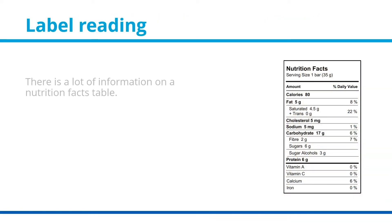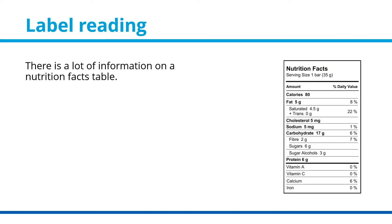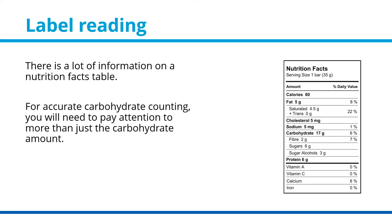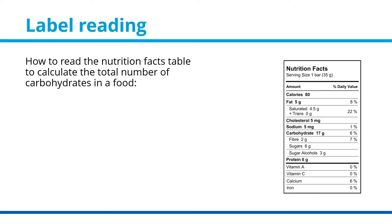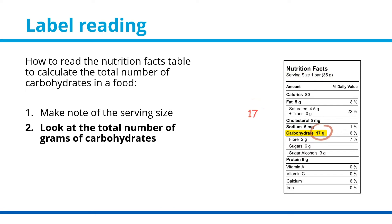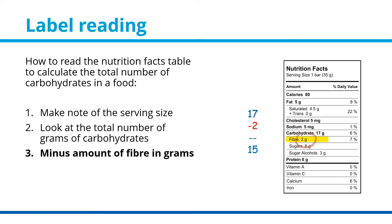Label reading. There is a lot of information on a nutrition facts table. For accurate carbohydrate counting, you will need to pay attention to more than just the carbohydrate amount. First, make a note of the serving size — in this case, it is one bar. Then look at the total number of grams of carbohydrates; in our example, the total carbohydrates is 17 grams. Then subtract the amount of fiber in grams from the total carbohydrates. In the example, we subtract the 2 grams of fiber from the 17 grams of carbohydrates to give us 15 grams.